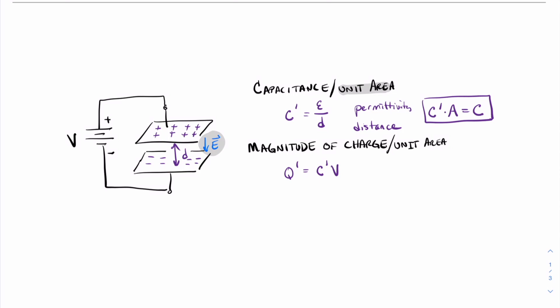The second thing that we can calculate is the magnitude of charge. In this case, we're also going to express the magnitude of charge as a per unit area, and we'll call this Q-prime. Q-prime will be equal to the capacitance per unit area, C-prime, times the voltage applied across the two parallel plates. Now that we have this foundation about the parallel plate capacitor, let's move on and try to understand the MOS capacitor.